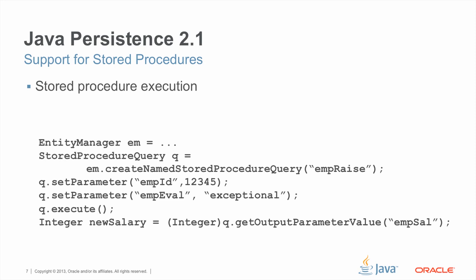Here's how we would invoke the stored procedure. Using the entity manager, we create an executable stored procedure query instance for our stored procedure query registered as emp-raise. We set the values of its parameters, we execute the stored procedure, and then to retrieve the result, we access it by getting the output parameter value.